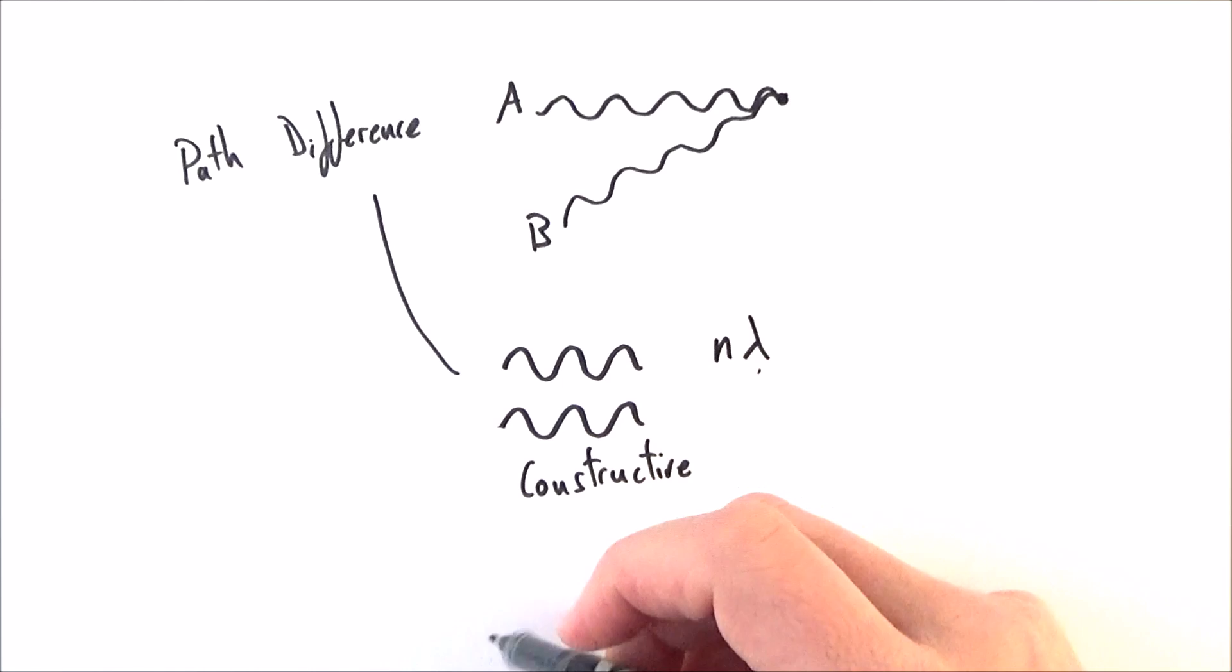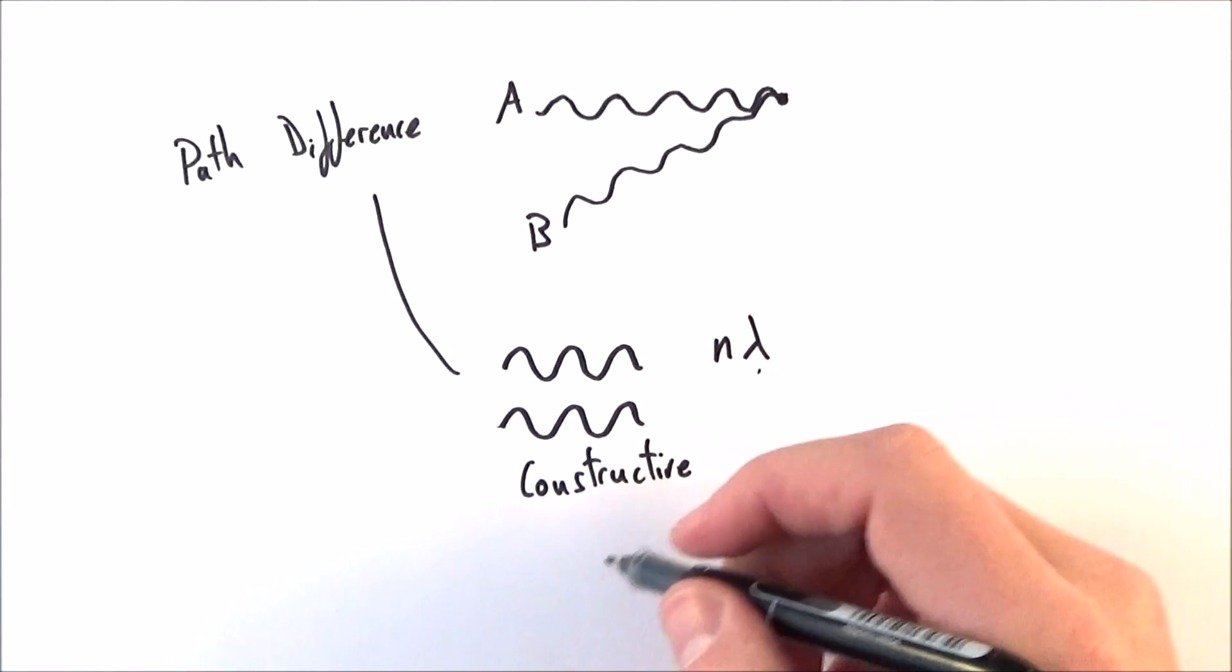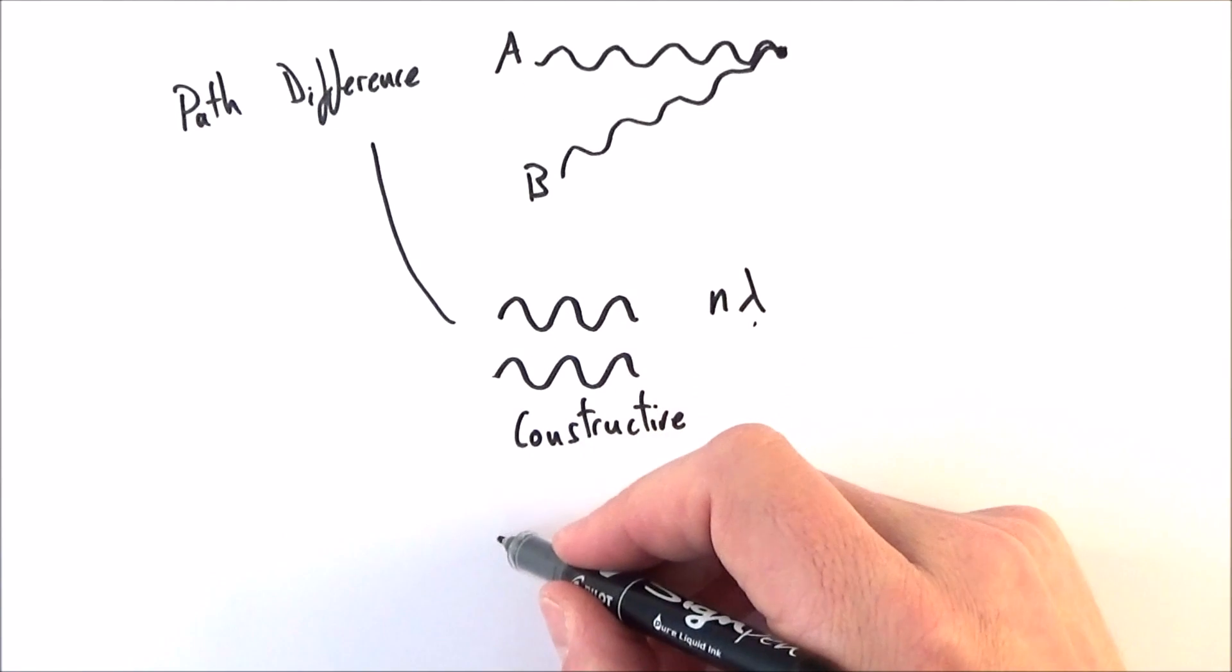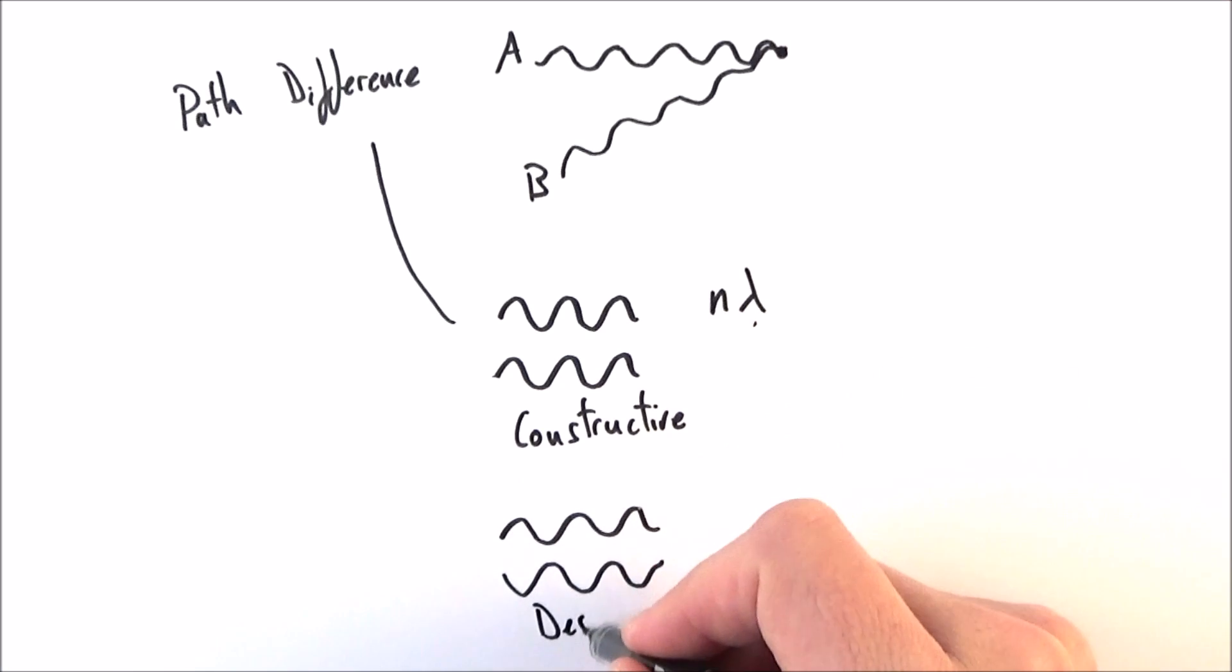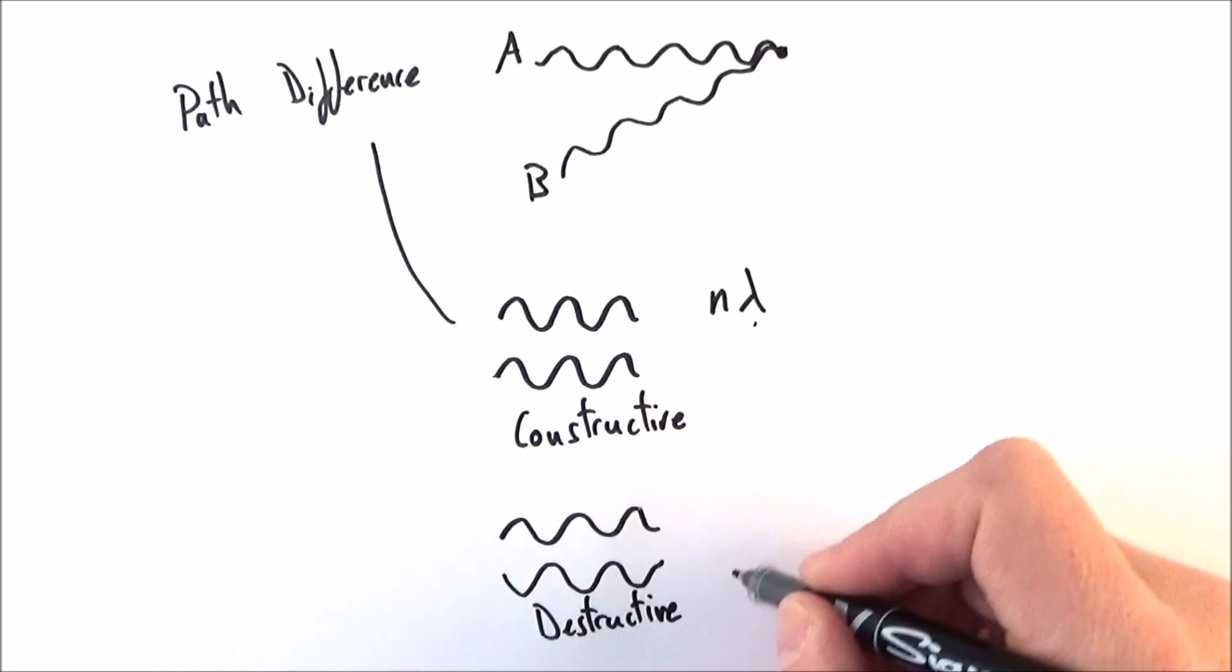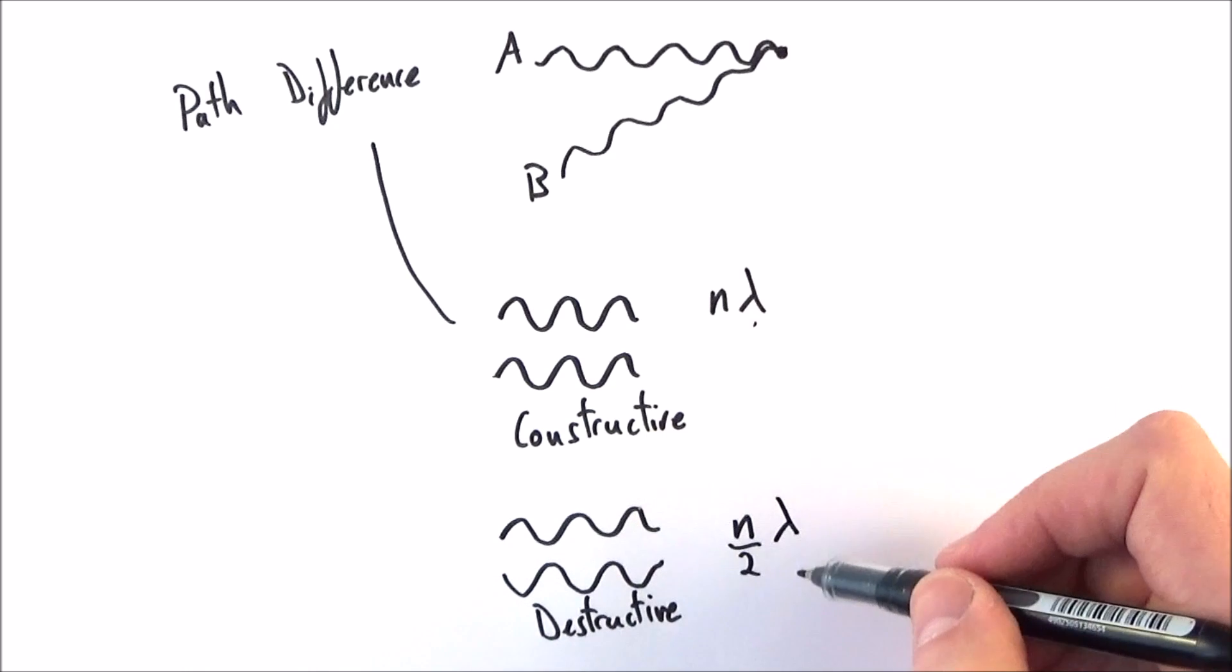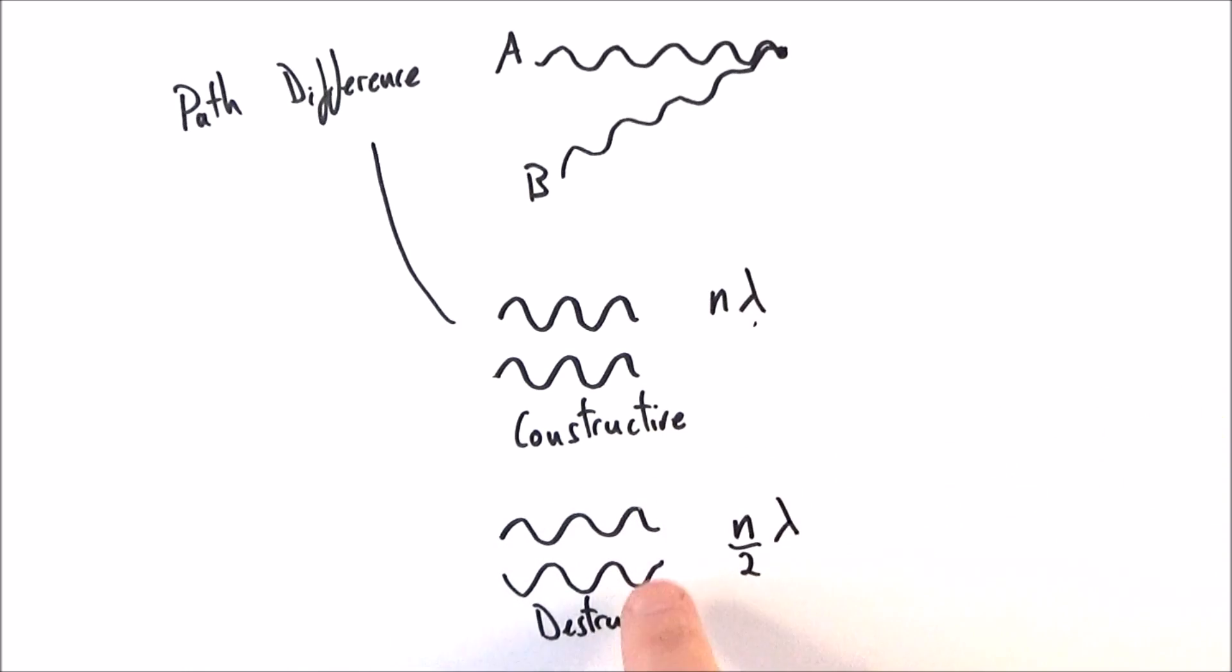Now, if there's some other multiple of lambda, then what we get is destructive interference. So perhaps we've got two sources of waves. What we then get is destructive interference. And what we then have is we have perfect destructive interference, maybe perhaps where light cancels out other light, when we have n over 2 lambda. So this is where we've got maybe half a wavelength difference or one and a half or two and a half or three and a half. And then we have perfect destructive interference.